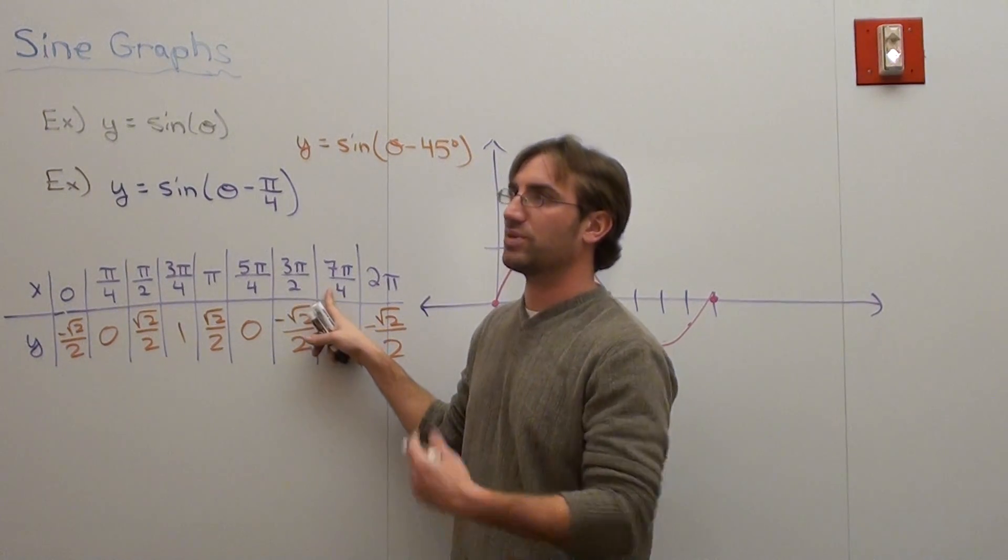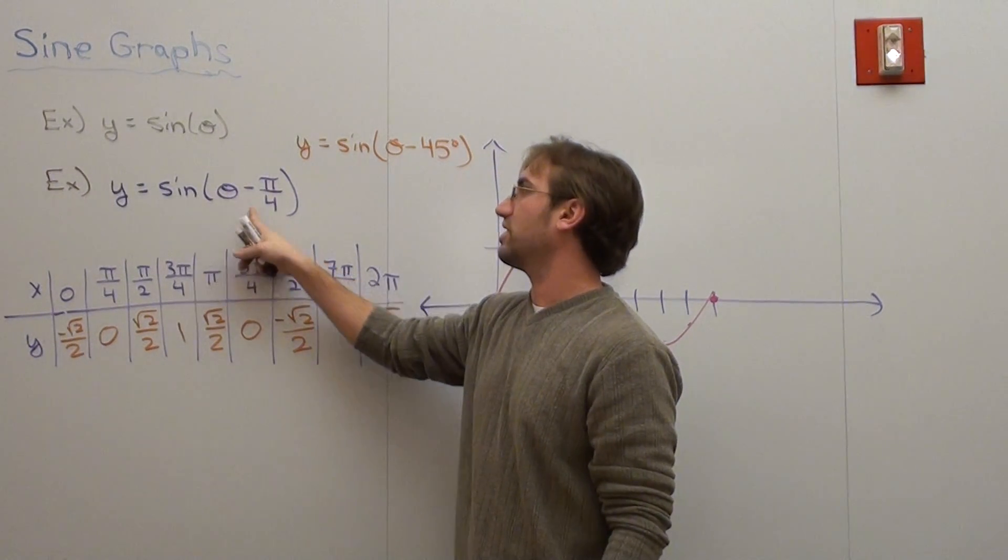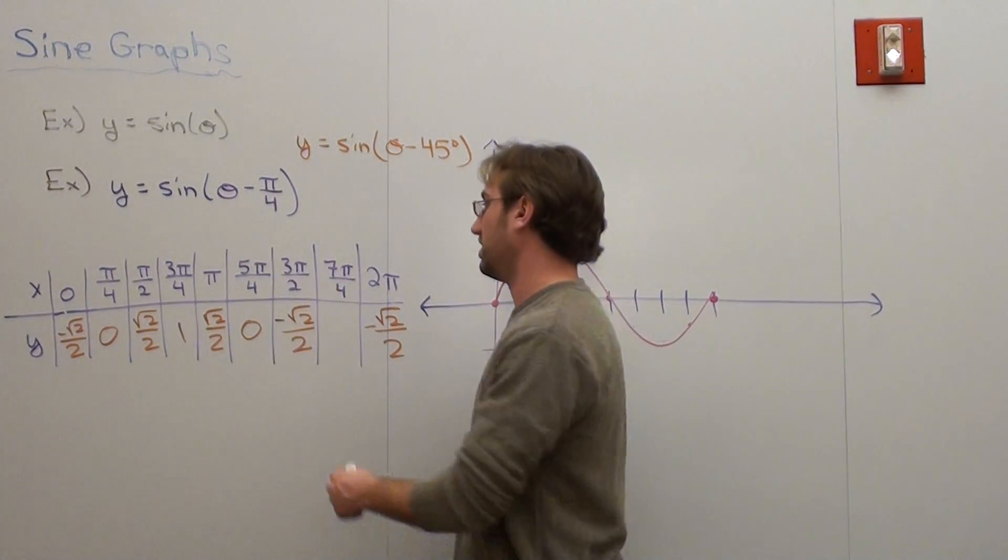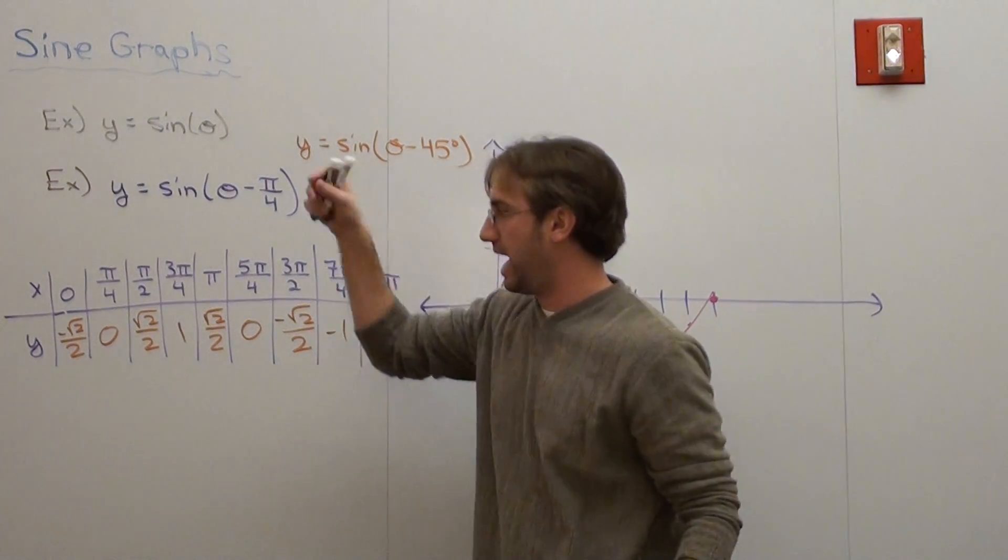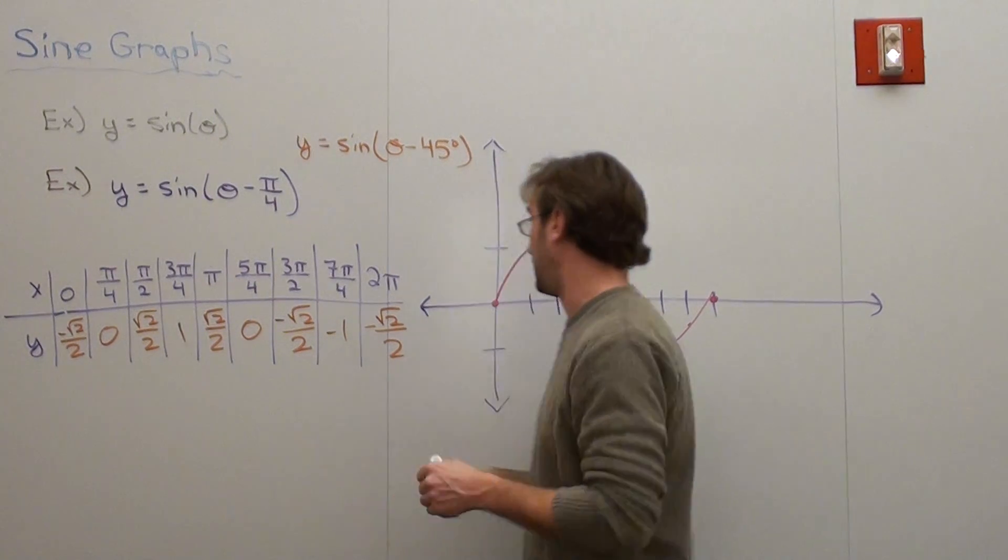This one. 7 pi over 4 is 315. 315 minus 45 is 270. Sine of 270 is negative 1. Bam! Okay, I think I got it. I hope I did it.